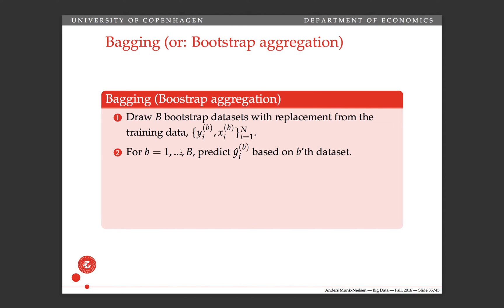Basically, for each of these data sets, you estimate your model, and you're going to get a different estimate because you have different data. Maybe some of the observations you don't get into the b'th bootstrap data set, maybe some of the observations you get twice.